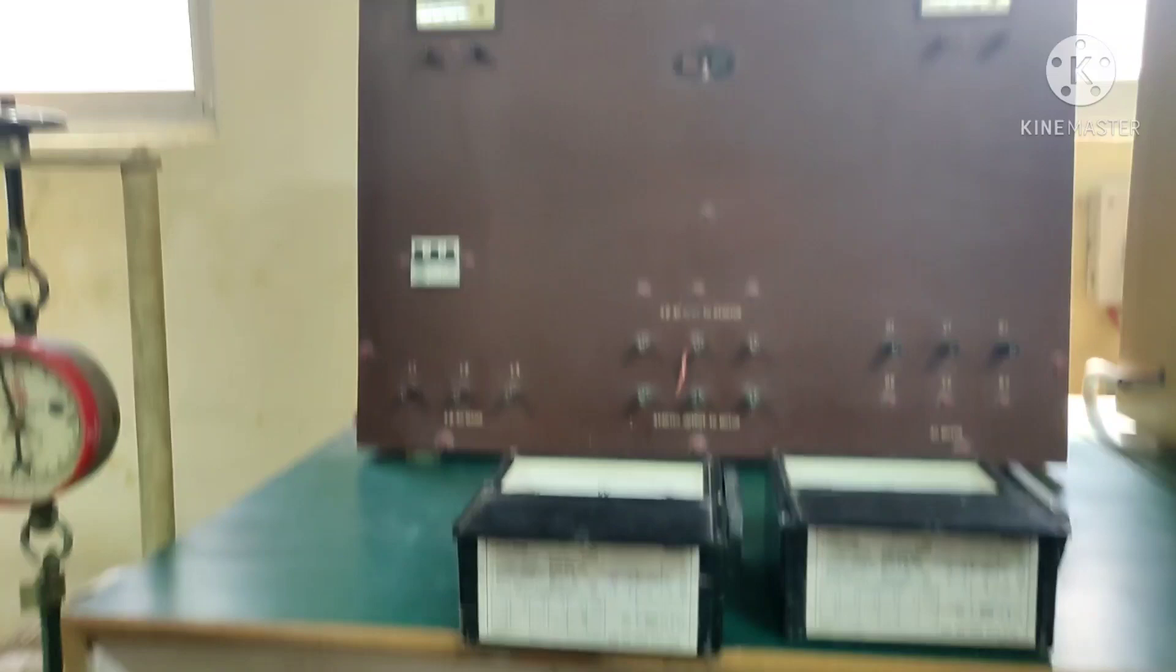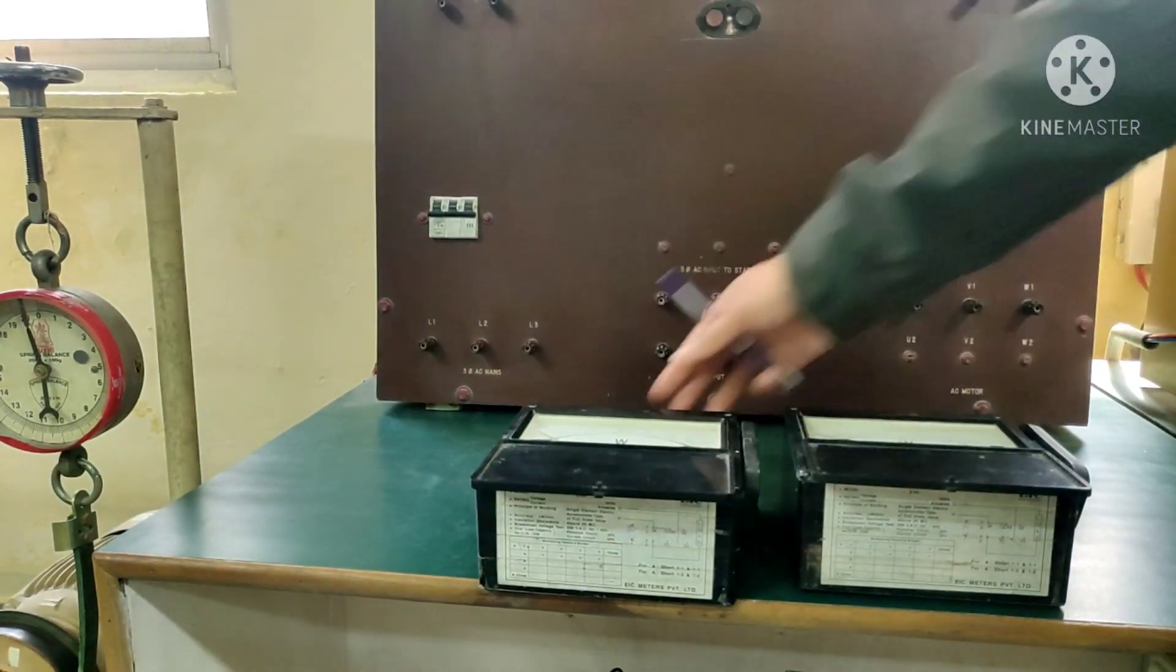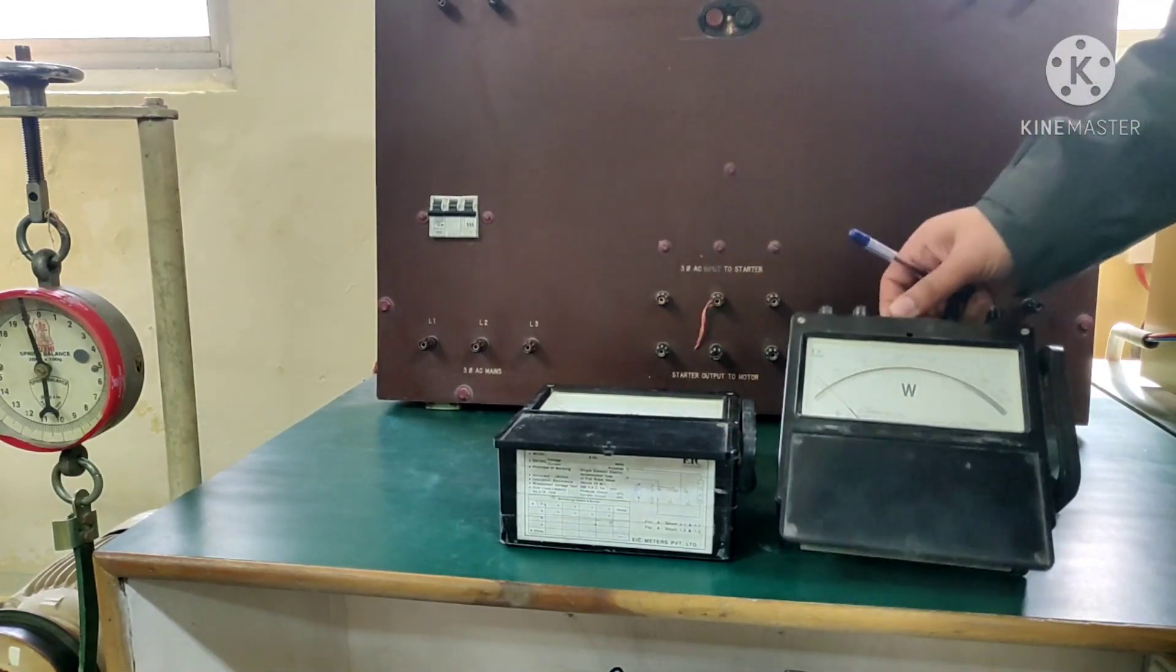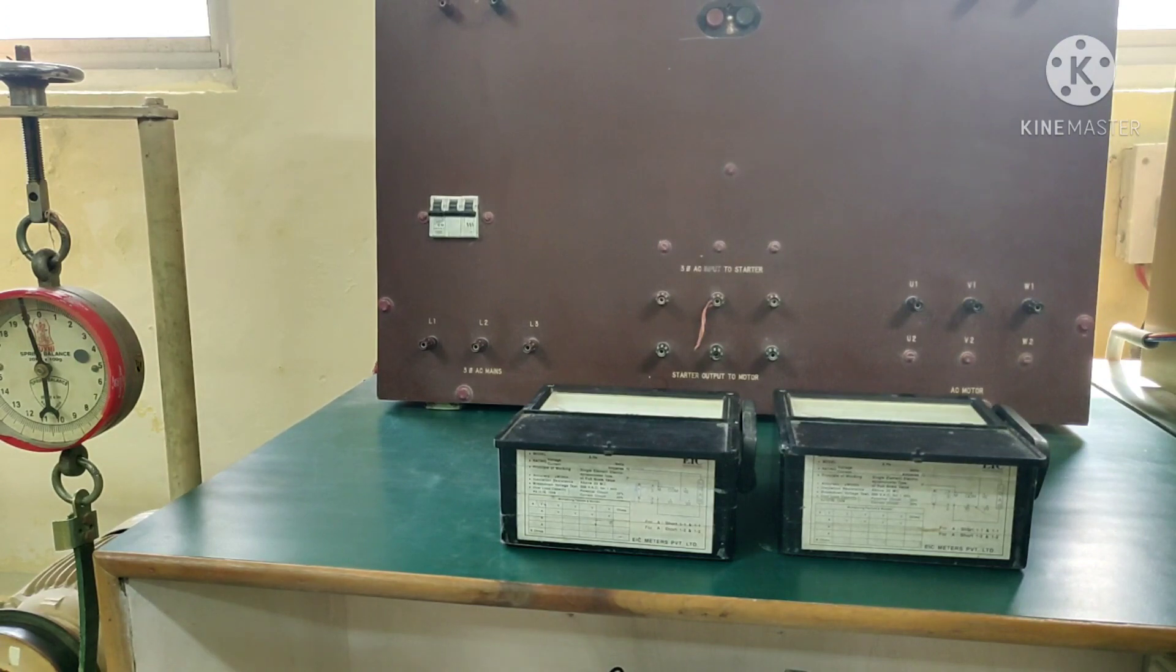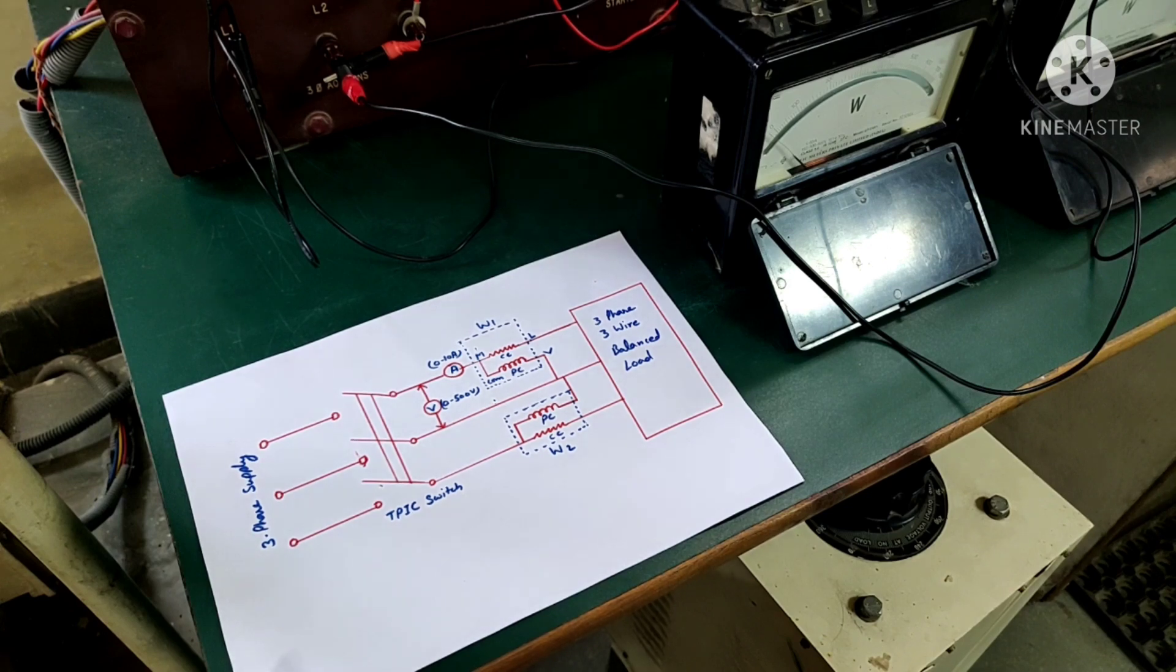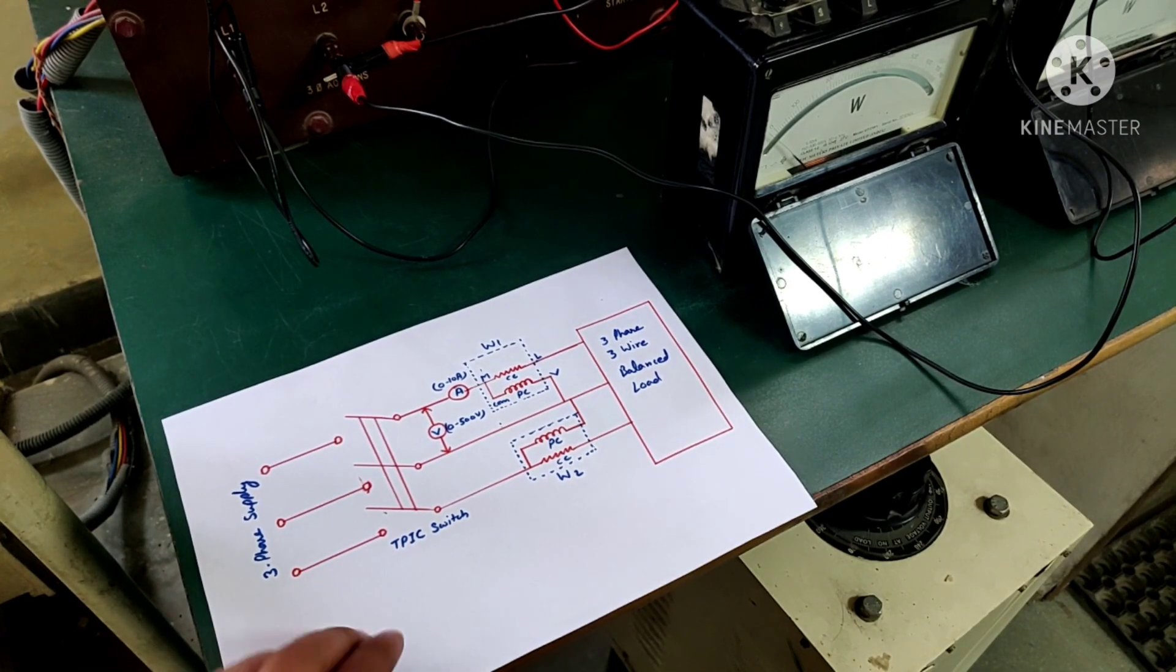So this will be your load for this experiment, and we also have two wattmeters, wattmeter number one and wattmeter number two, which we will be utilizing to measure the power of a three-phase balanced circuit.